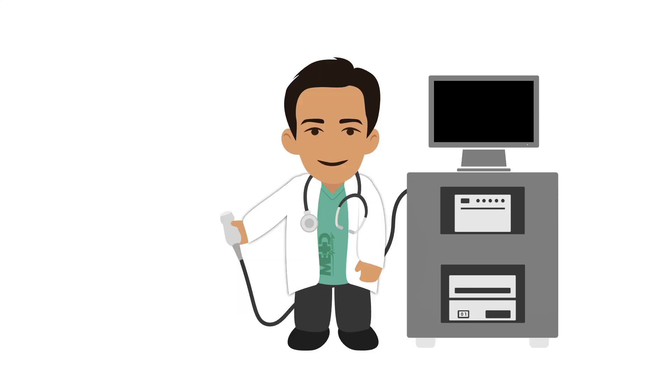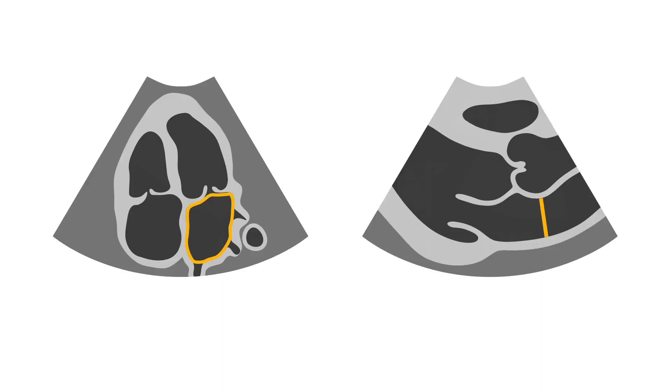Let's first review how you measure the left atrium on 2D echo. Here you can see the left atrium being measured. A normal left atrial area is less than 20 cm2, and a normal anterior-posterior diameter ranges from 2 to 4 cm.